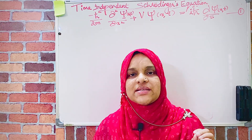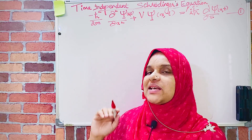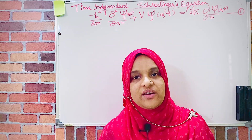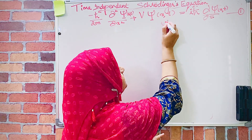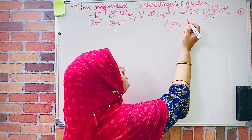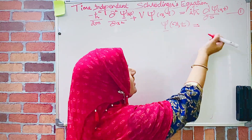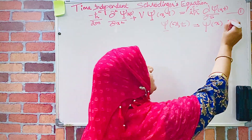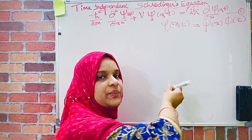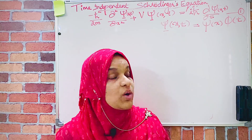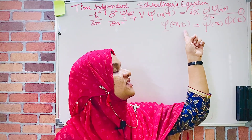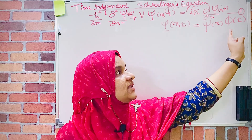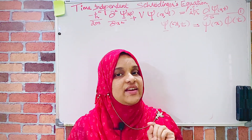That method is known as the variable separable method. So, capital Ψ, which is a function of x and t, can be expressed as the product of two independent functions. That is, Ψ(x, t) can be written as ψ(x), a function of position alone, multiplied by φ(t), a function of time alone. This is known as the variable separable method. Mark this as equation number two.